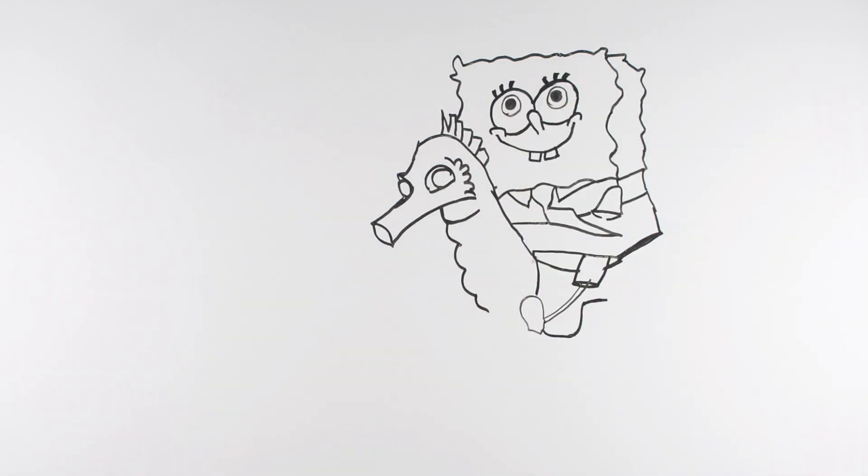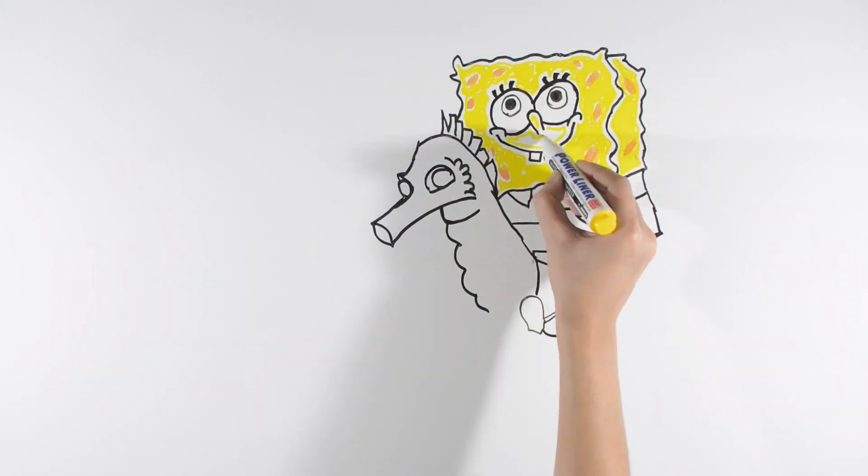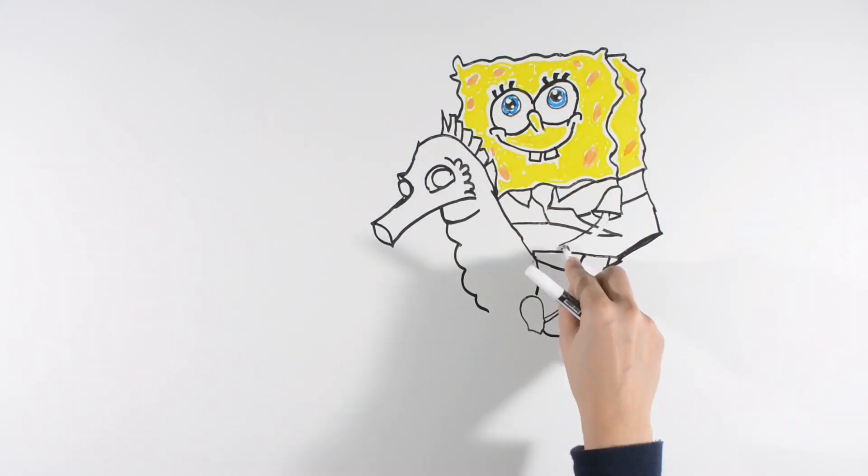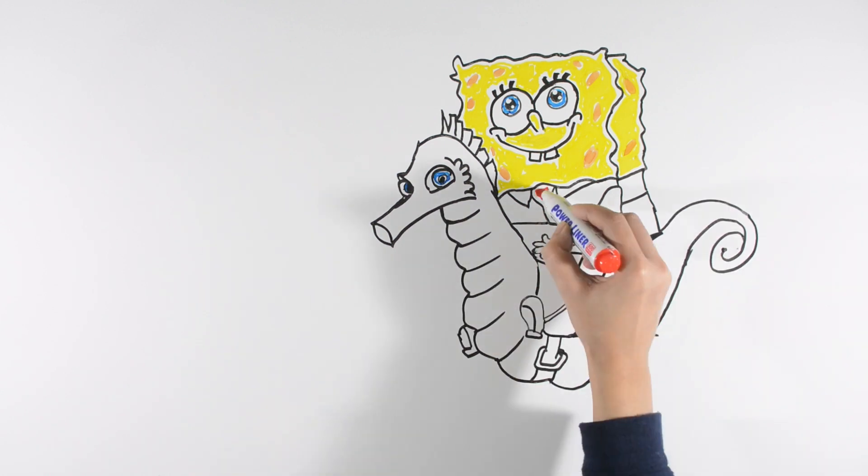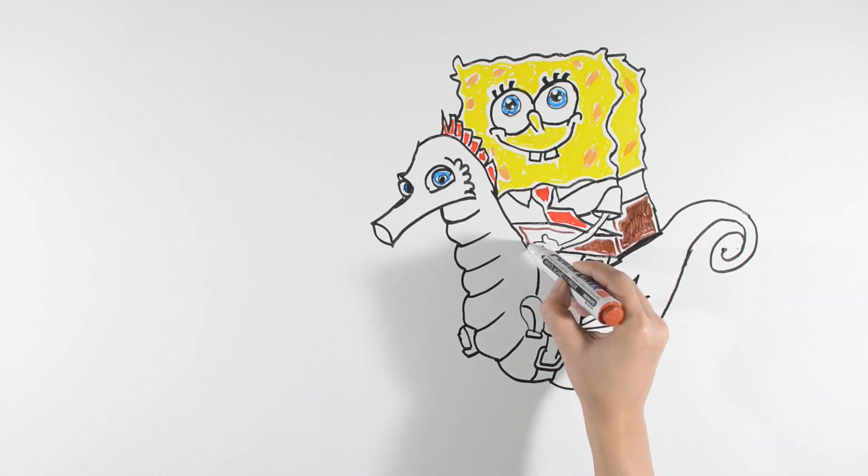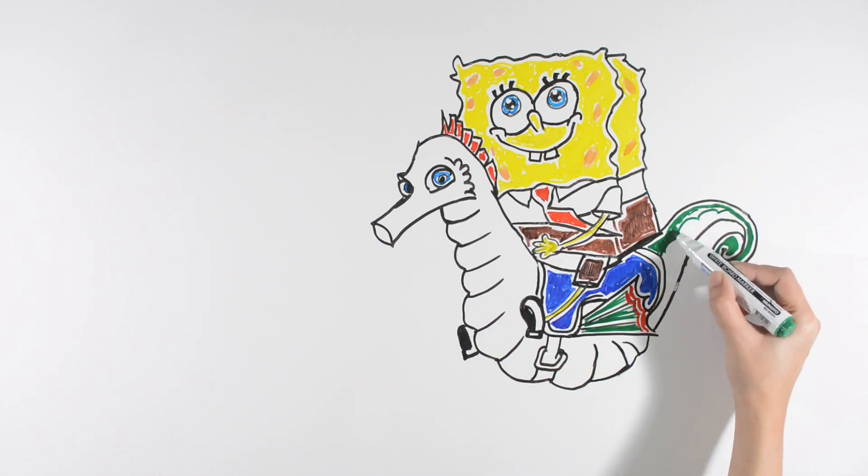SpongeBob is the brainchild of Steven Hillenburg, a marine biology instructor and animator who created it for Nickelodeon. The show first aired on May 1st, 1999. SpongeBob was originally going to be named SpongeBoy and the series called SpongeBoy Ahoy, but both names were changed as they were already trademarked.